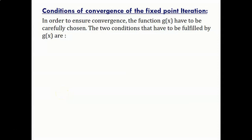In order to ensure the convergence of the algorithm, the function g(x) has to be carefully chosen. If g(x) is not carefully chosen, it may not lead to convergence. The two conditions to ensure convergence of the algorithm are as follows.